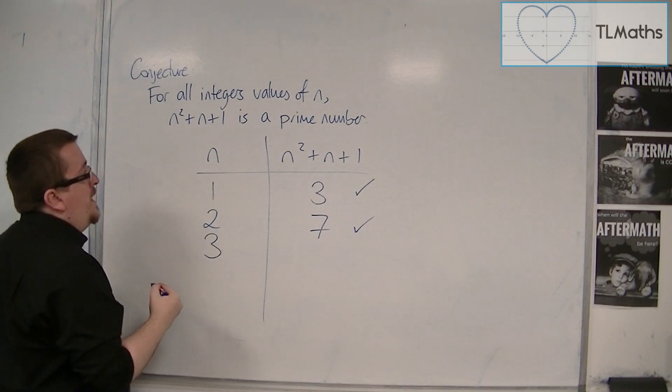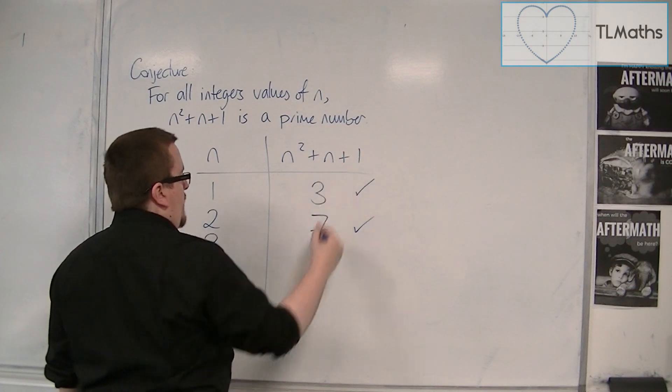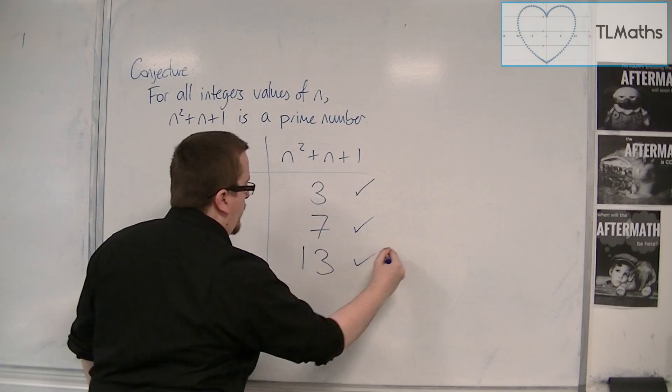When n is 3, we've got 3 squared plus 3 plus 1. That's 13, so it works for 3 as well.